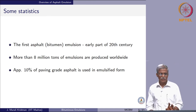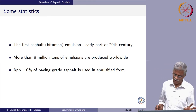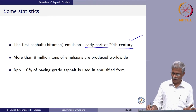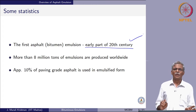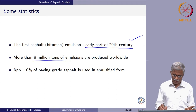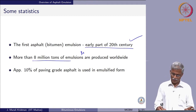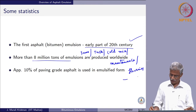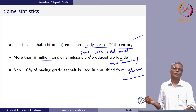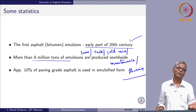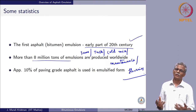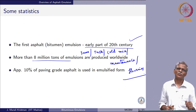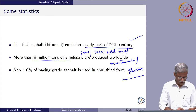Some statistics before we start. The first asphalt or bitumen emulsion came into use in the early part of the 20th century. As of now — roughly 2-year-old statistics — more than 8 million tons of emulsions are being produced, for prime, tack, cold mix applications, maintenance, slurries, and more. Approximately 10 percent of the paving-grade bitumen that is produced is used in emulsified form.